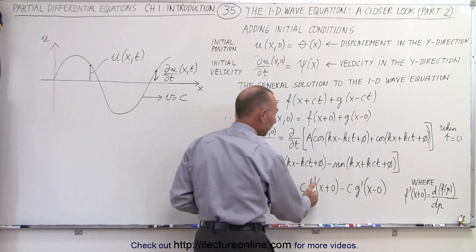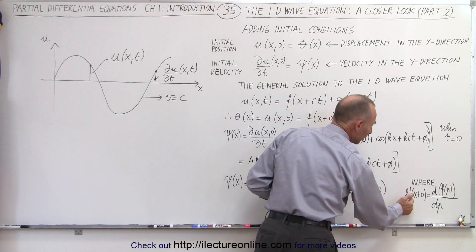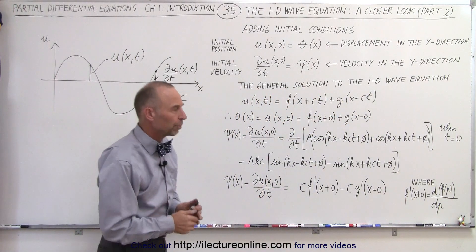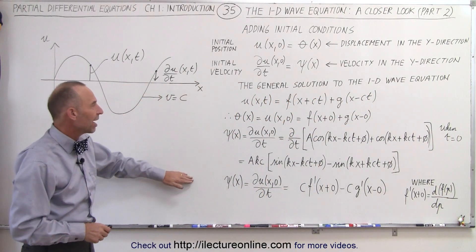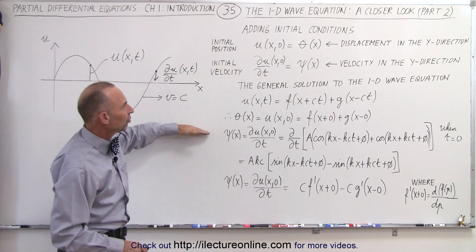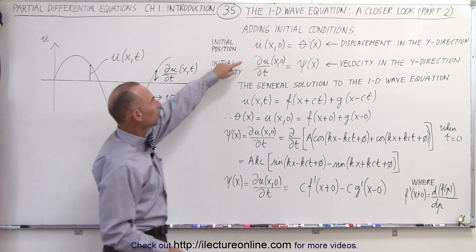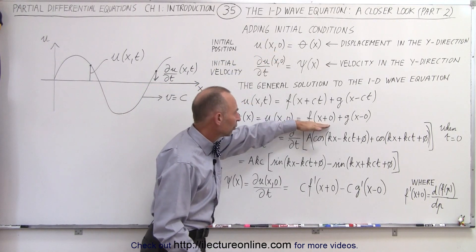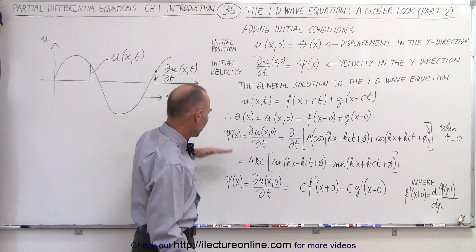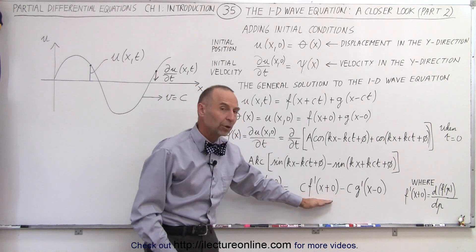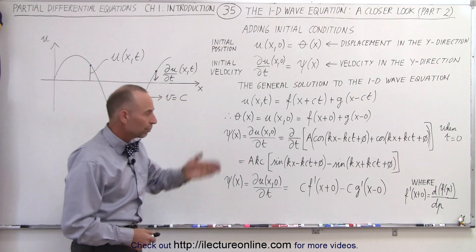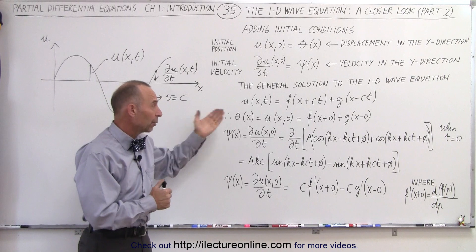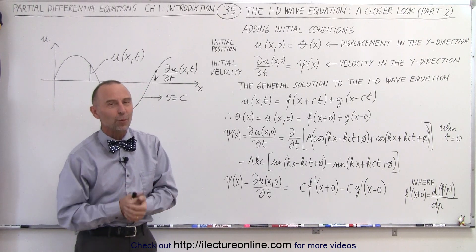So that's how we apply the initial conditions to a wave equation. Notice that when we let t equal to zero, the wave equation changes for the position, and when we take the derivative and set t to zero, we obtain the initial condition for the perpendicular velocity to the motion of the wave. That's how we interpret how we apply the initial conditions to the 1D wave equation.